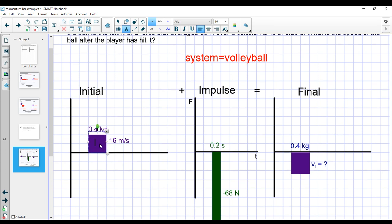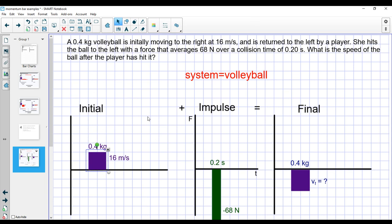So let's look at how that works with our bar charts. So initially, if I'm going to say that this volleyball was moving with a positive velocity, it was moving to the right, had a positive velocity, then it had some initial positive momentum. And I make my bar charts for momentum the same way I ever have. So the width of it is the mass of the ball. The height is the velocity of the ball. So 0.4 kilograms by 16 meters per second. And that's positive for the initial momentum of the ball.